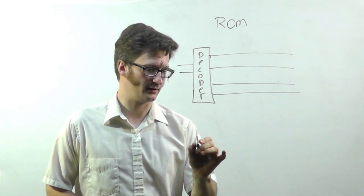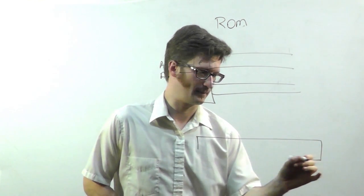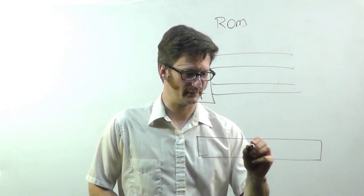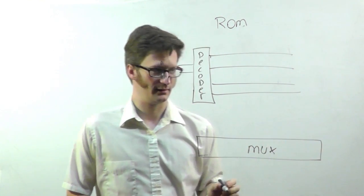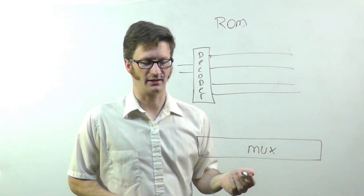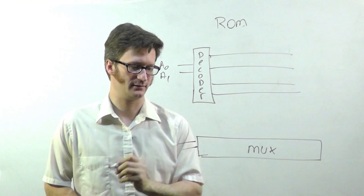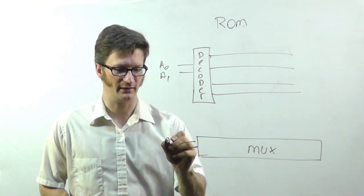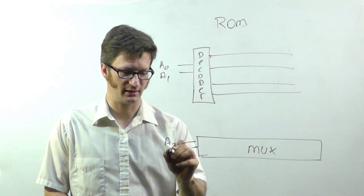And then, down here I have a multiplexer. And, depending on what your logic is, this could be any number of inputs. And, this would be your address 2, address 3.